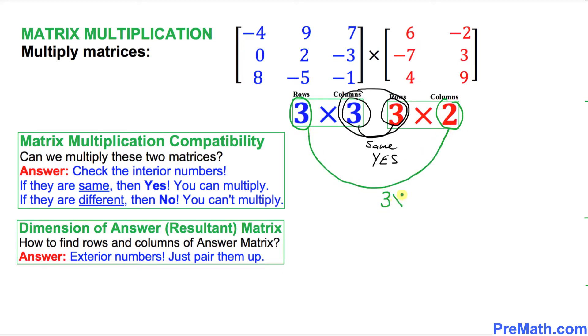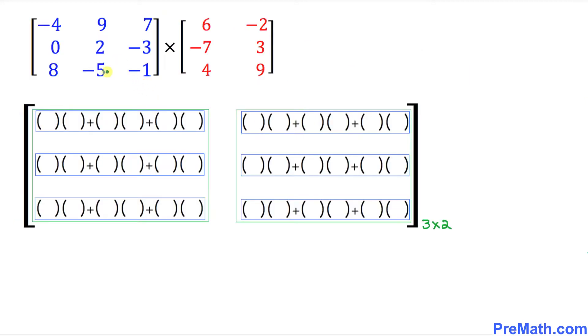So 3 by 2 is going to be the dimension of our answer matrix. That means three rows and two columns. So when we multiply these two matrices, our roadmap or the matrix scheme is going to look like this one. We know that the dimension of our answer matrix is supposed to be 3 by 2.